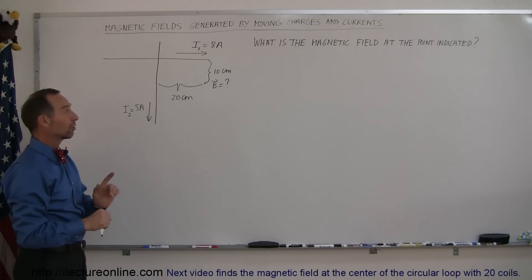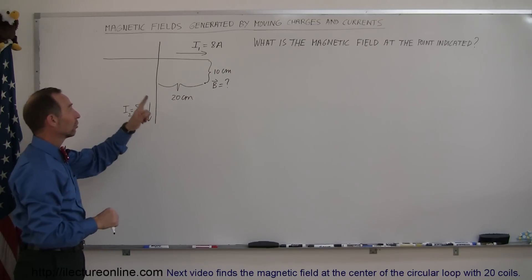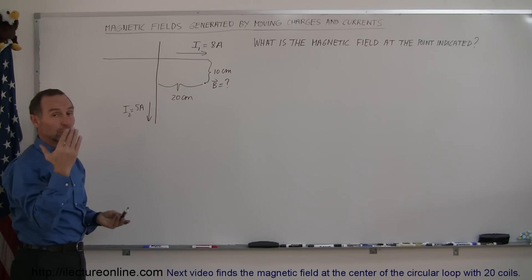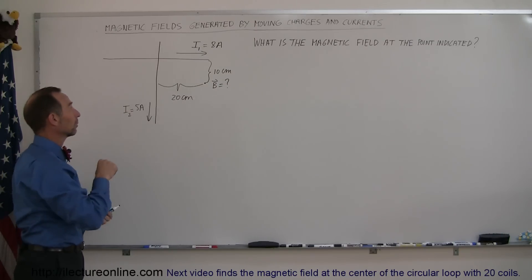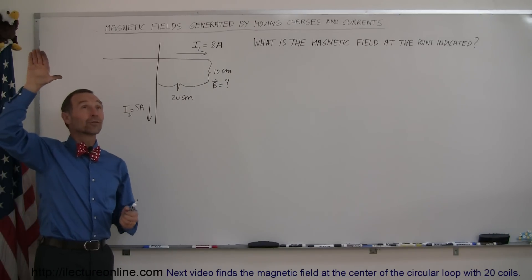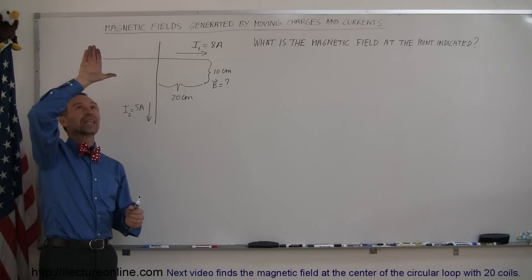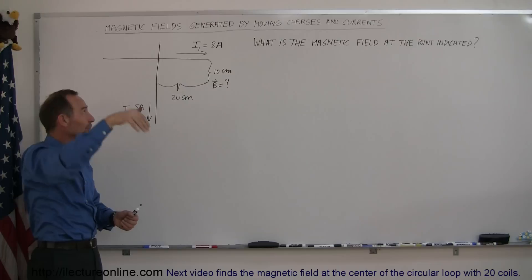Alright, the best thing to do is to find the direction of the magnetic field at that location due to the two wires. Using your right hand rule, starting with wire number 1, point your thumb in the direction of the current and then your fingers will curl in the direction of the magnetic field.